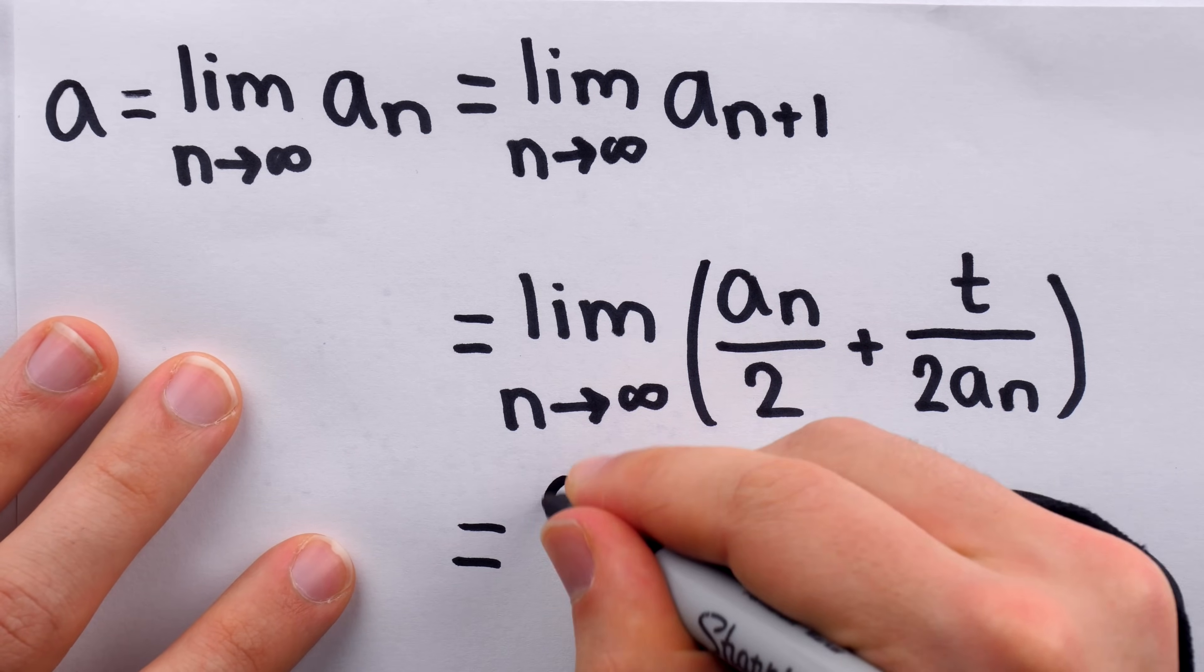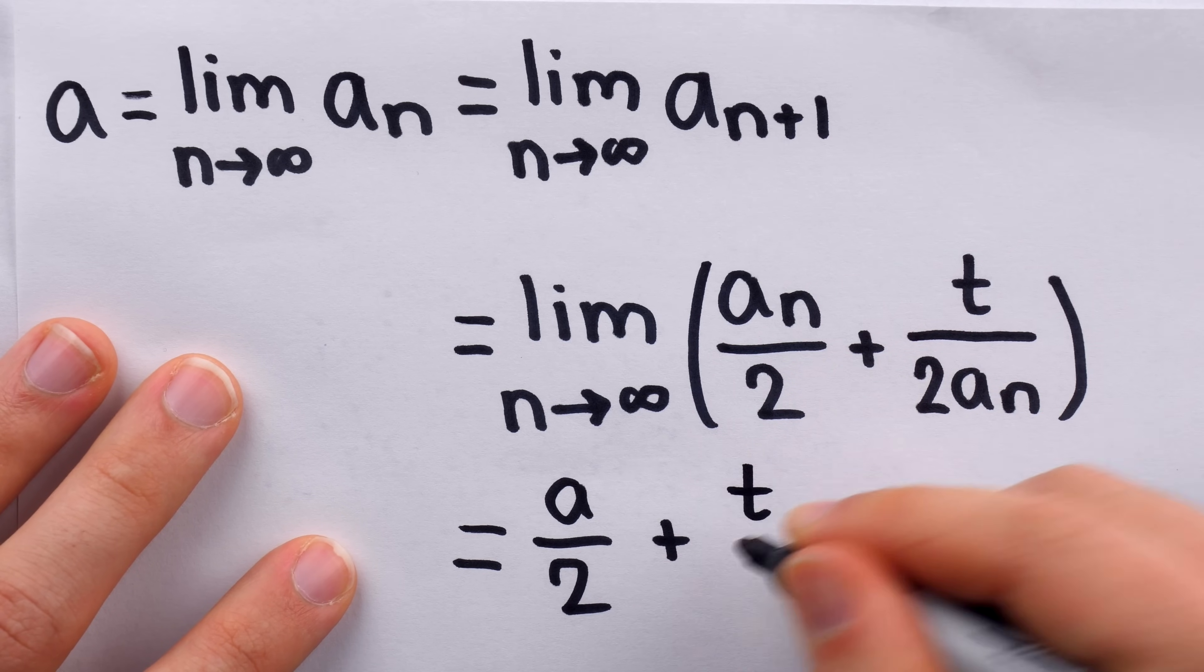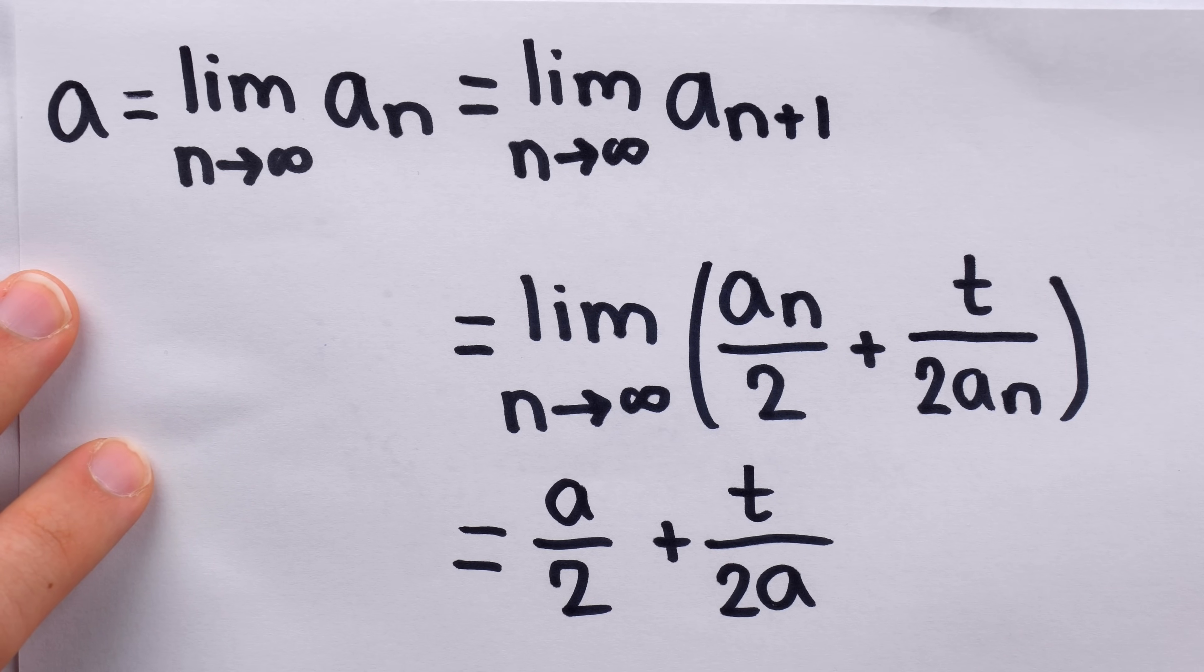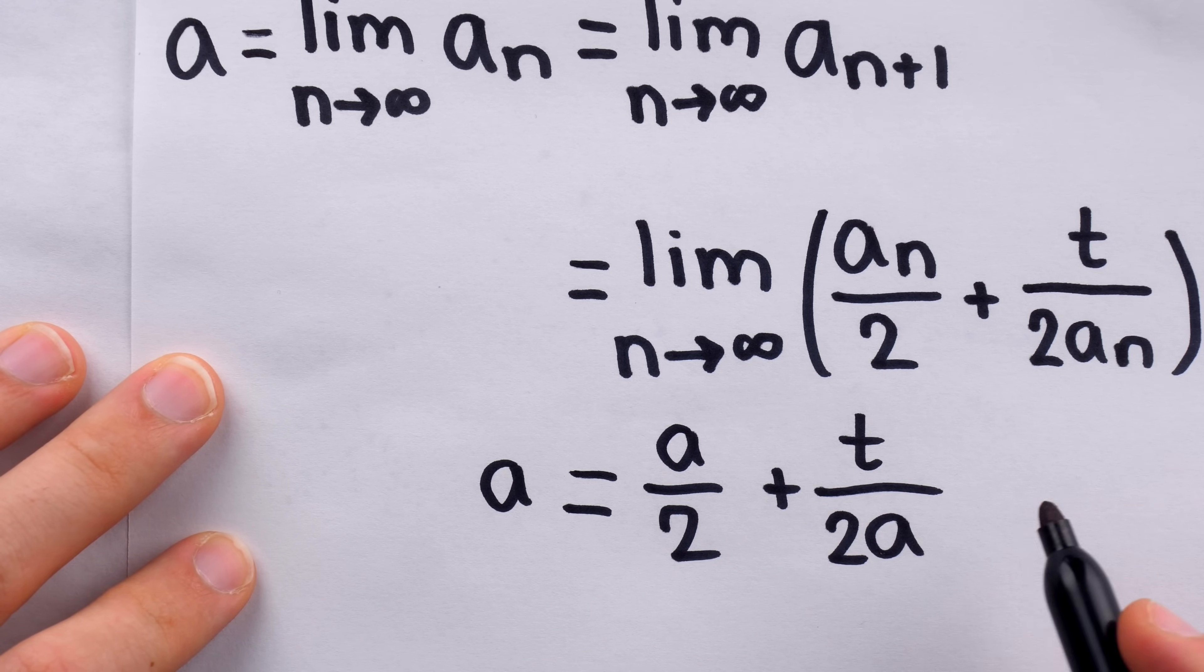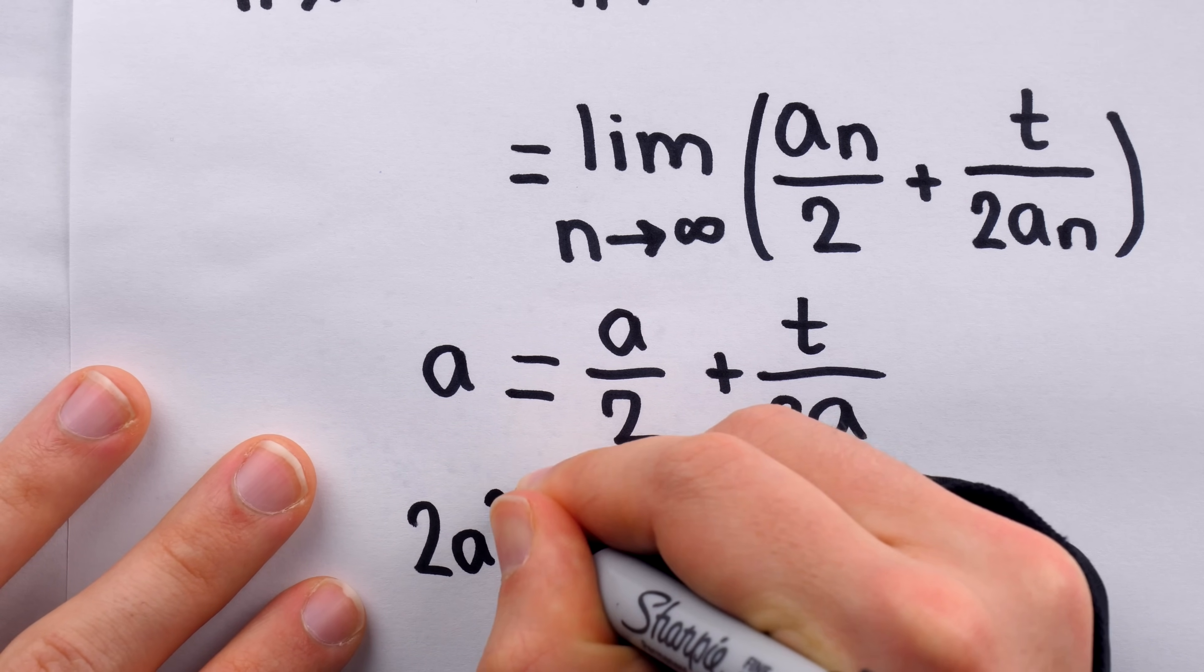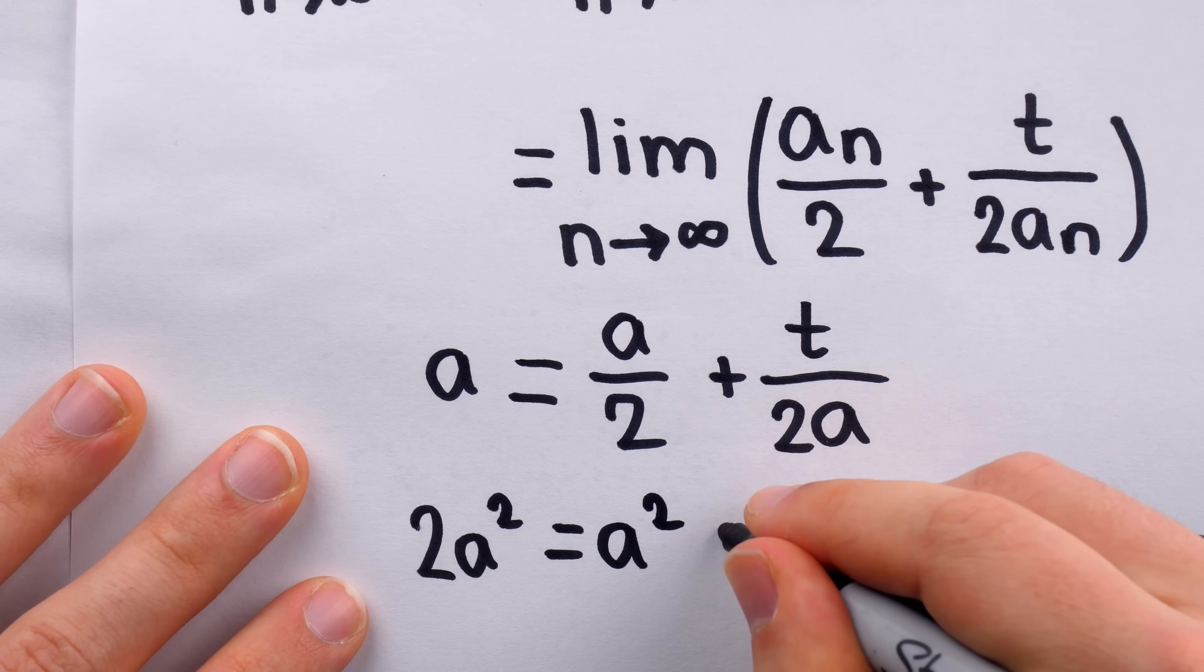Thus, this limit is equal to a over 2 plus t over 2 a. So, now we have that a is equal to this, and we just have to solve for a. Since a is equal to this, let's go ahead and multiply everything by 2 a to get rid of the fractions. Thus, on the left, we have 2 a squared, and this is equal to a squared plus t.